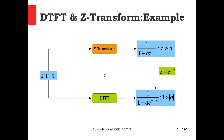As an example, a^n · u[n] is an infinite-duration causal discrete-time signal. Its Z-transform is 1 / (1 − a·z^{−1}) with ROC: |z| > |a|, the exterior of a circle in the Z-plane. Using the DTFT analysis equation directly gives 1 / (1 − a·e^{−jω}). We can also obtain this by substituting z = e^{jω} into X(z) — this substitution evaluates the Z-transform on the unit circle, which is exactly X(ω).